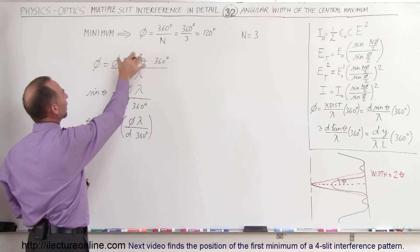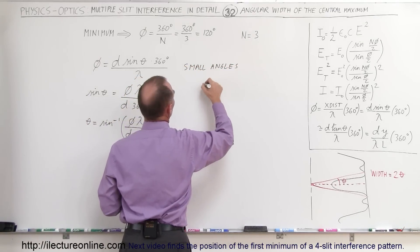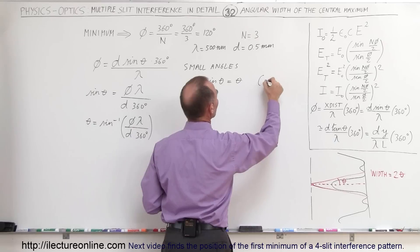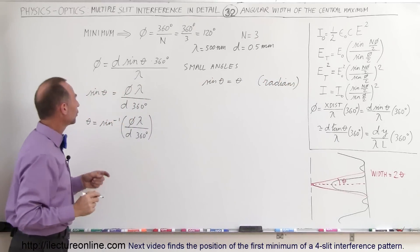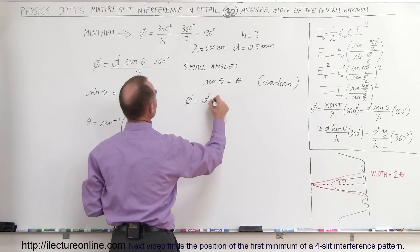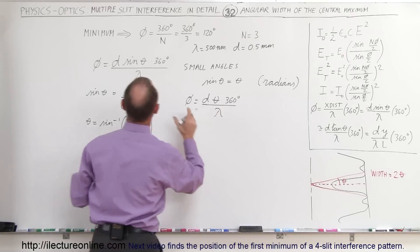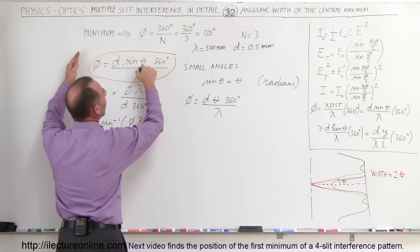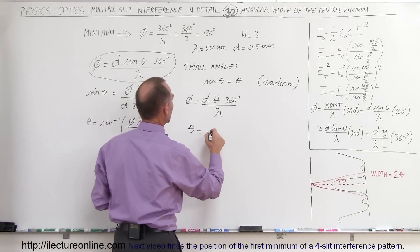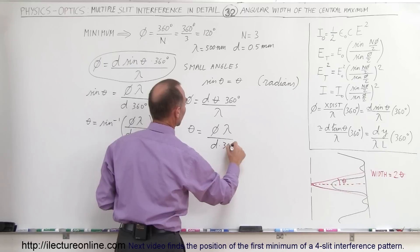For small angles, the sine of theta is equal to theta, and of course that needs to be in radians. So if that's true, I'm going to replace sine of theta by theta in my equation. The phase angle is going to be equal to D times theta times 360 degrees divided by lambda. So if I solve this for theta, I get theta is equal to the phase angle times lambda divided by D times 360 degrees.